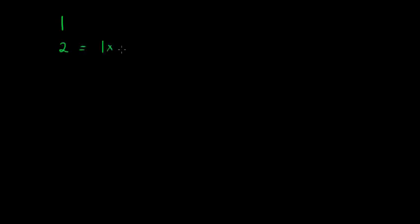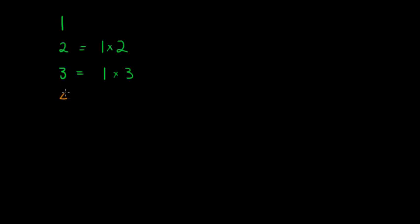2 is prime because 2 can only be written as 1 times 2. 3 is also prime because we can only say 1 times 3. However, the number 4 is called a composite number because we can write 4 as 2 times 2 — the product of 2 prime numbers. How about 5? 5 can only be written as 1 times 5; no other combination gives me 5.